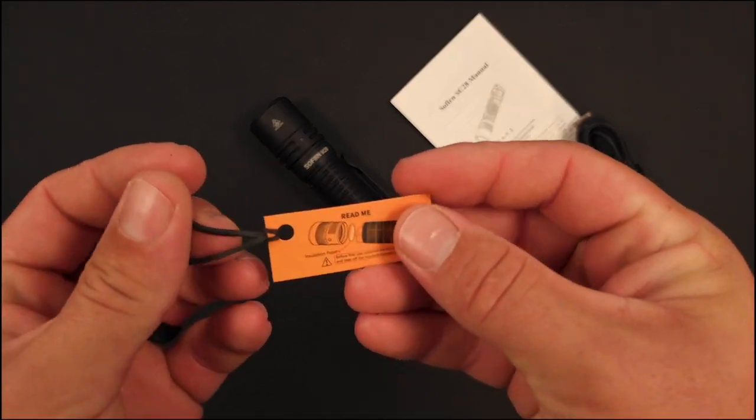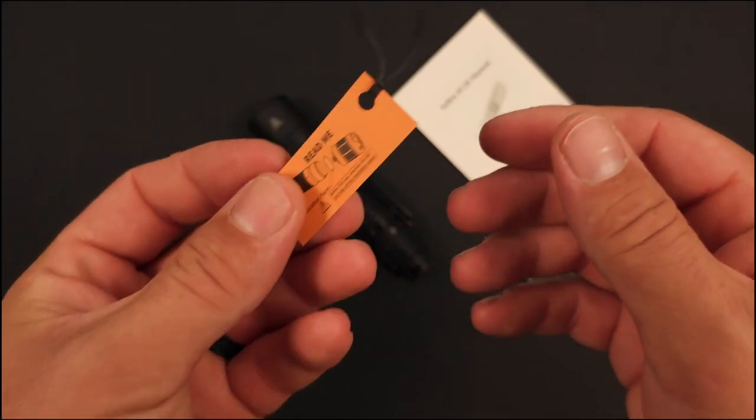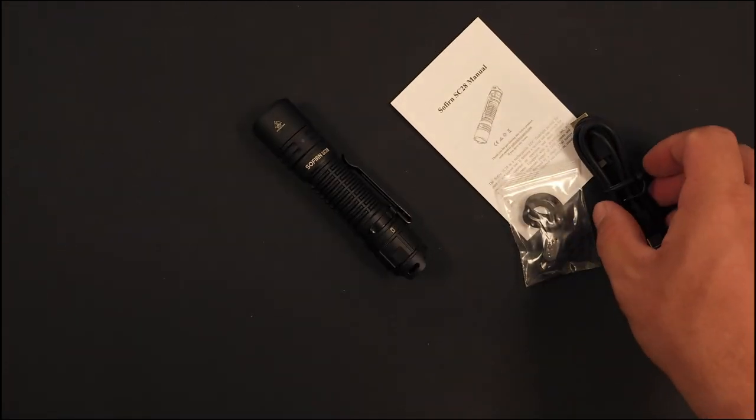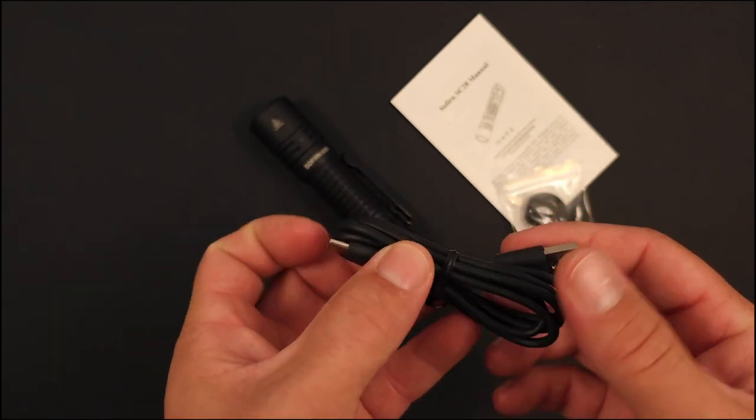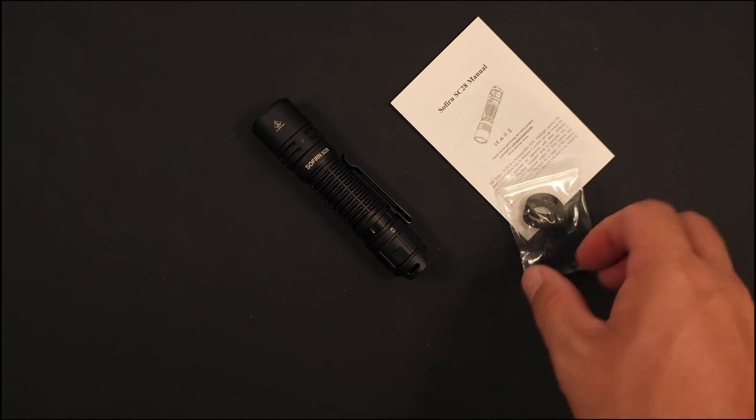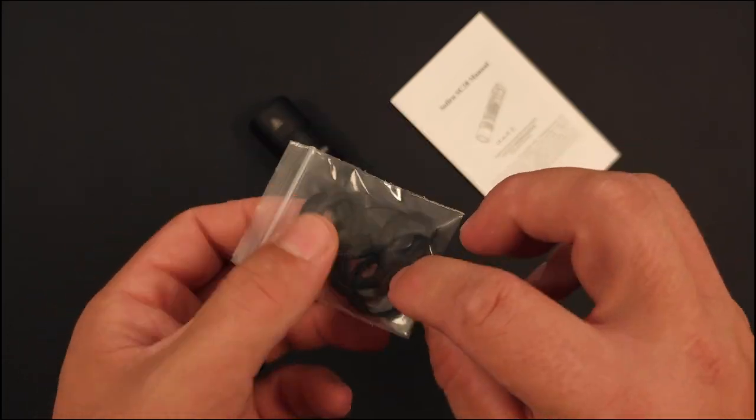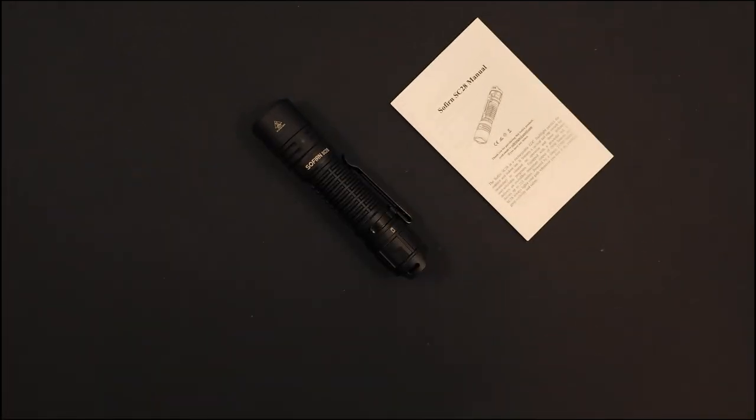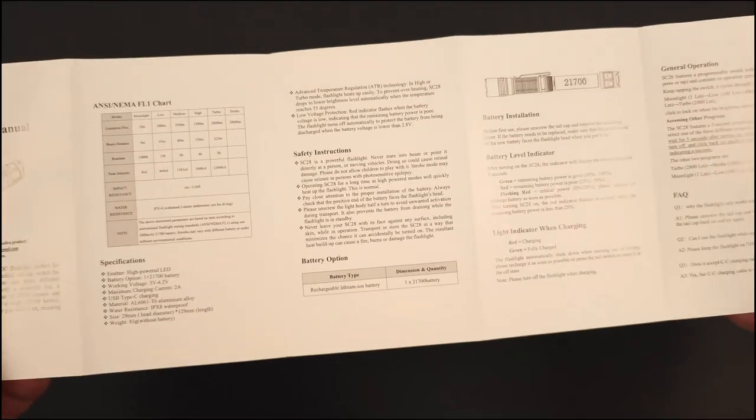In addition to the box, you get this little tag letting you know there's a battery isolator to remove to activate your light. It comes with a USB-C cord - USB-A to USB-C so you can plug into your existing power bricks. You also get a couple of replacement O-rings and a generic lanyard, and your SC28 manual.